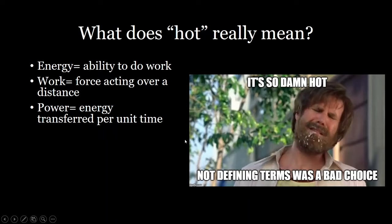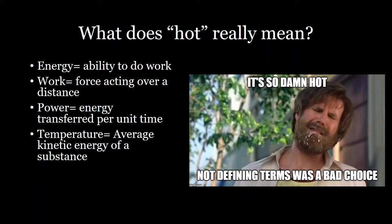Power is energy transferred per unit time. For example, if you had a wire and you had electricity going through that wire, the amount of energy going through that wire over time would be the power output. Temperature is the average kinetic energy of a substance — kinetic energy is just how fast different molecules and atoms are moving inside that substance — so temperature is just that average movement of all of those atoms.